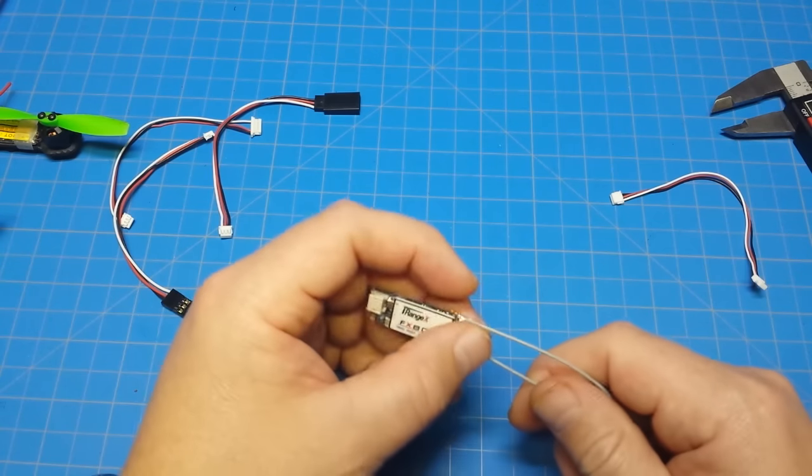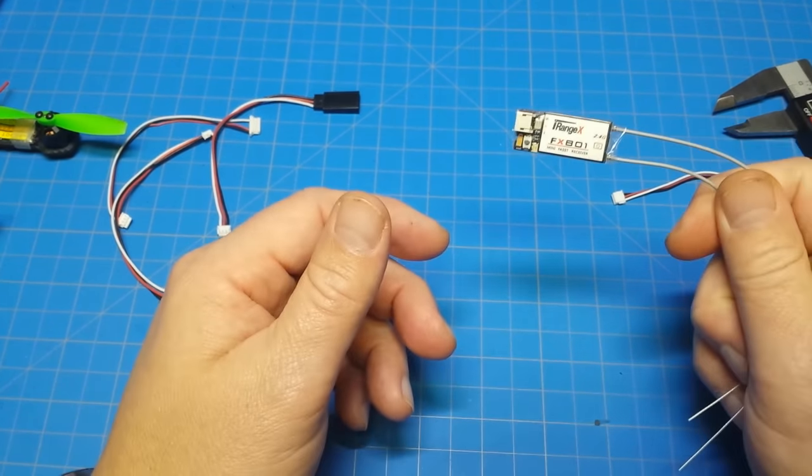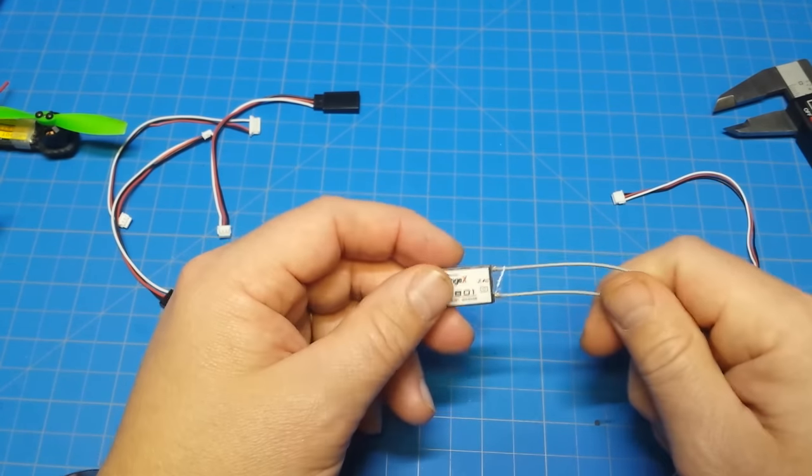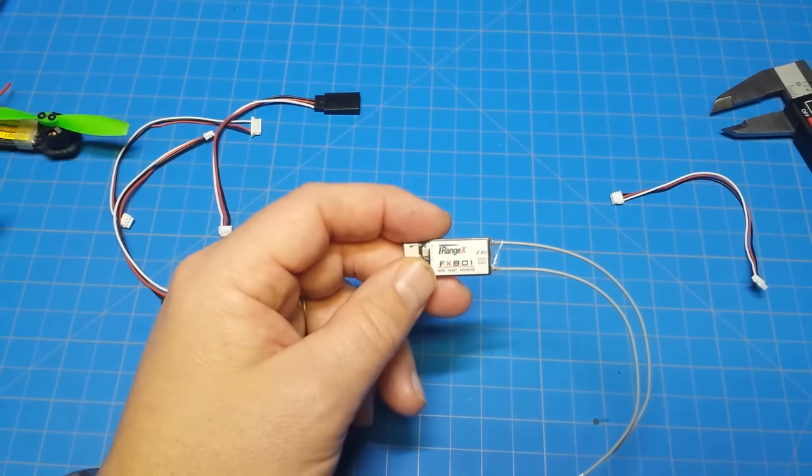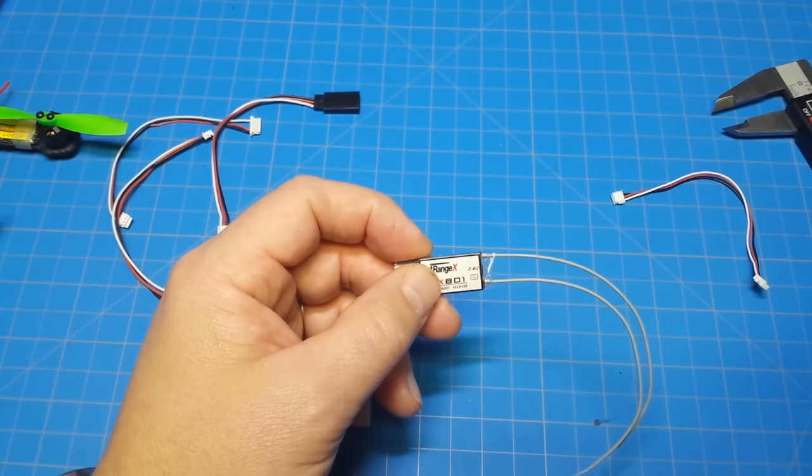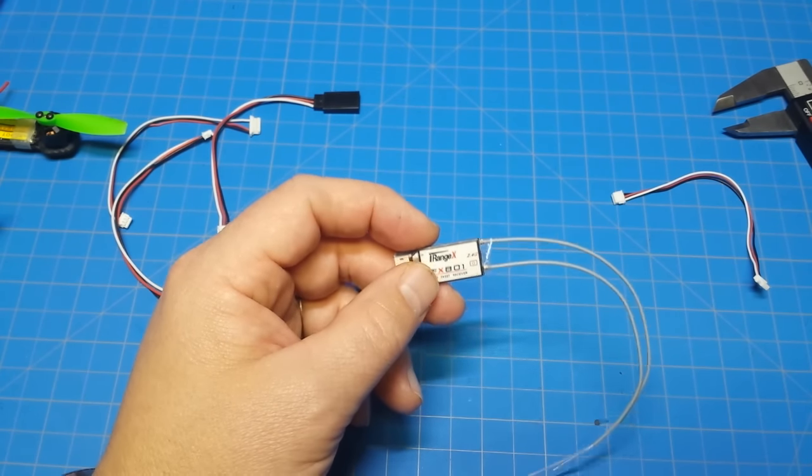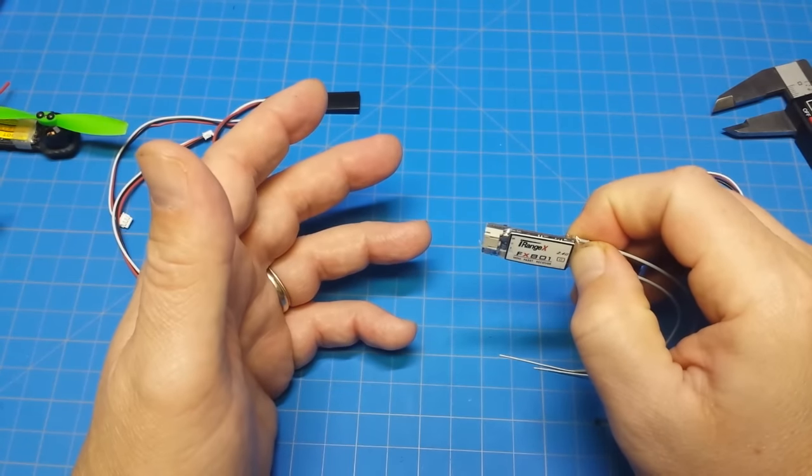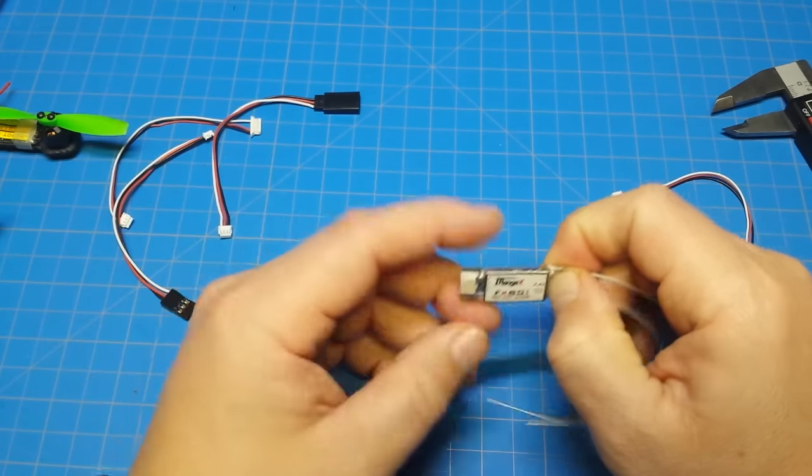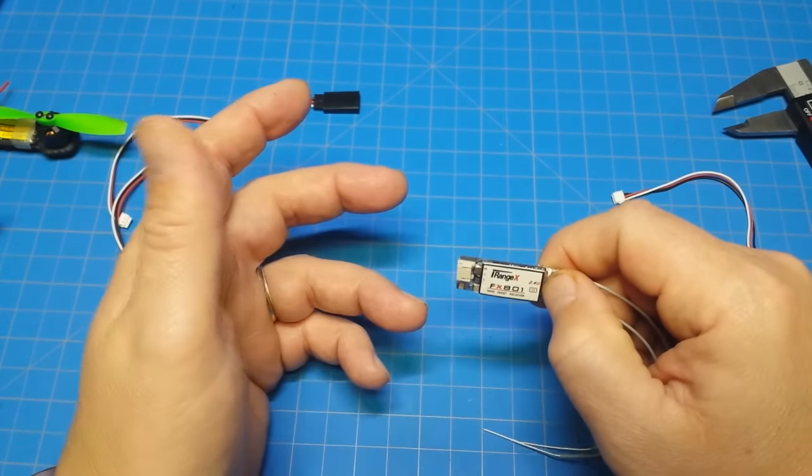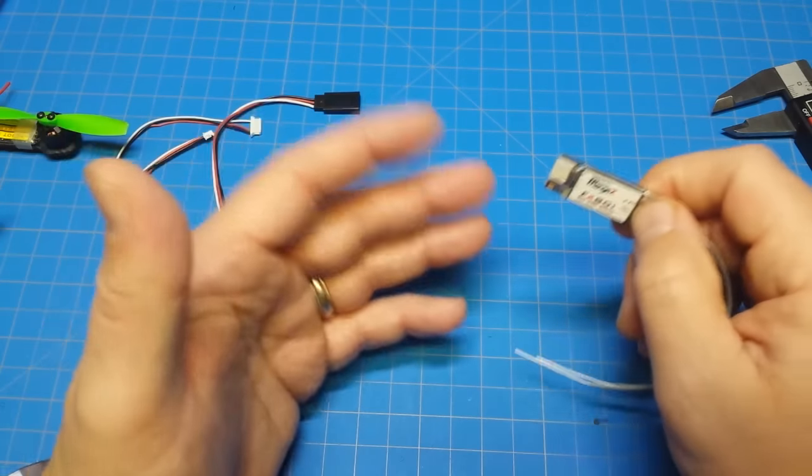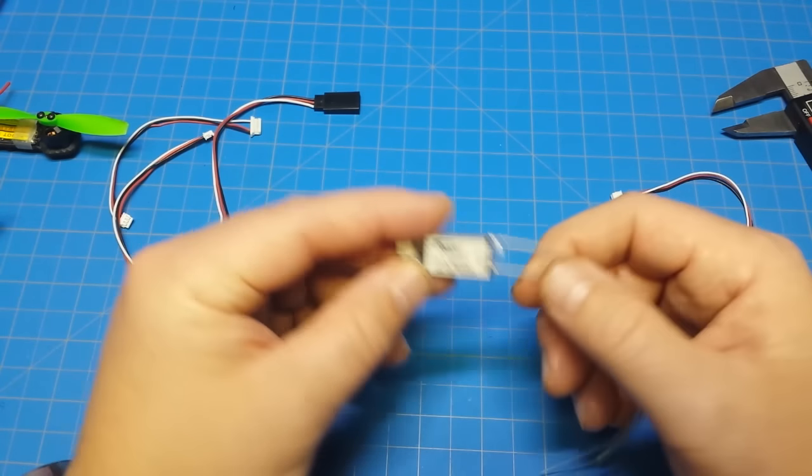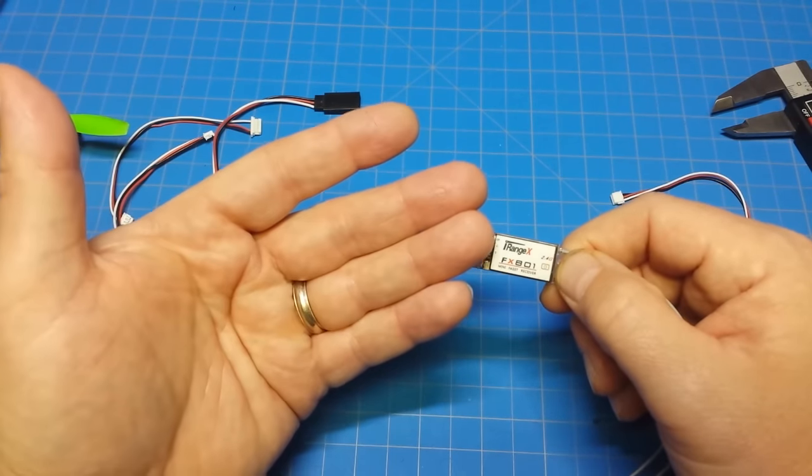And I think right now, the one I have here in my hand, the FX801, is on sale. And I think it's $18.99. The FR Sky version, which is $16.99, and I think the cheapest micro receiver you can get for Taranis use, or FR Sky Protocol, is close to $30, somewhere between $26 and $29. So if you're worried about your budget, I would take a look at these.